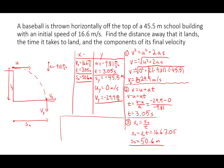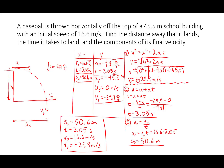Let me write out my final answers. Distance away that it lands: sx equals 50.6 meters. The time it takes to land: t equals 3.05 seconds. The components of the final velocity: vx equals 16.6 meters per second, and vy equals negative 29.9 meters per second. Those are my solutions. That's all for projectile motion.